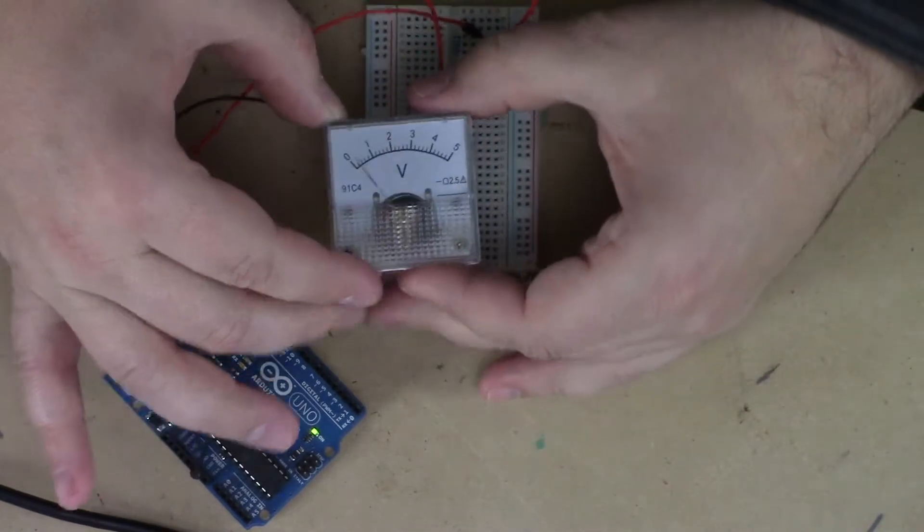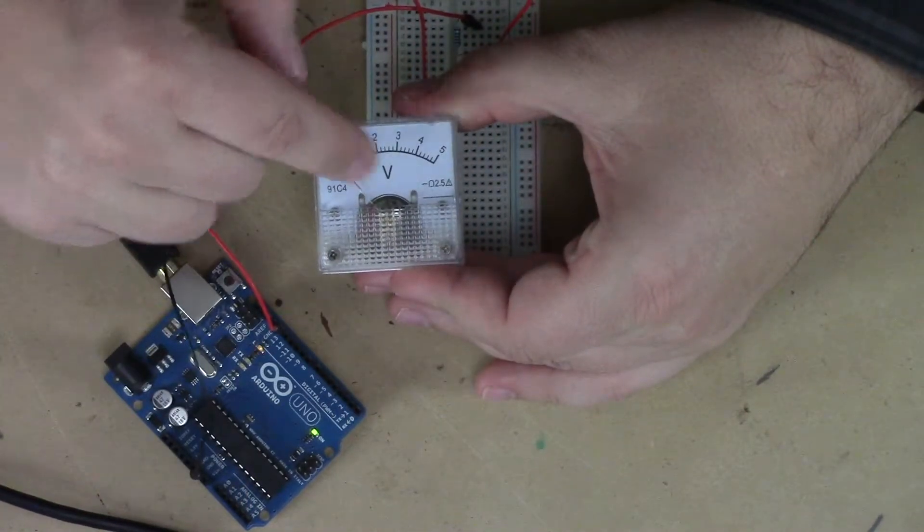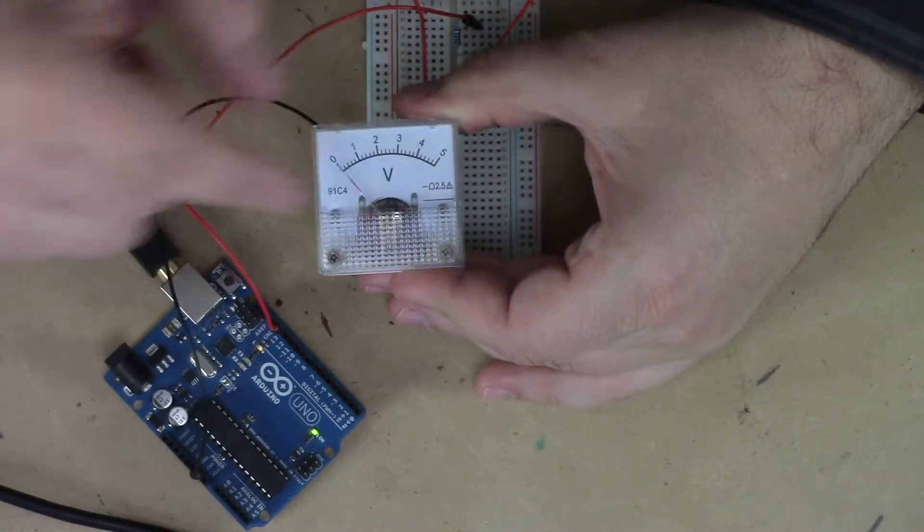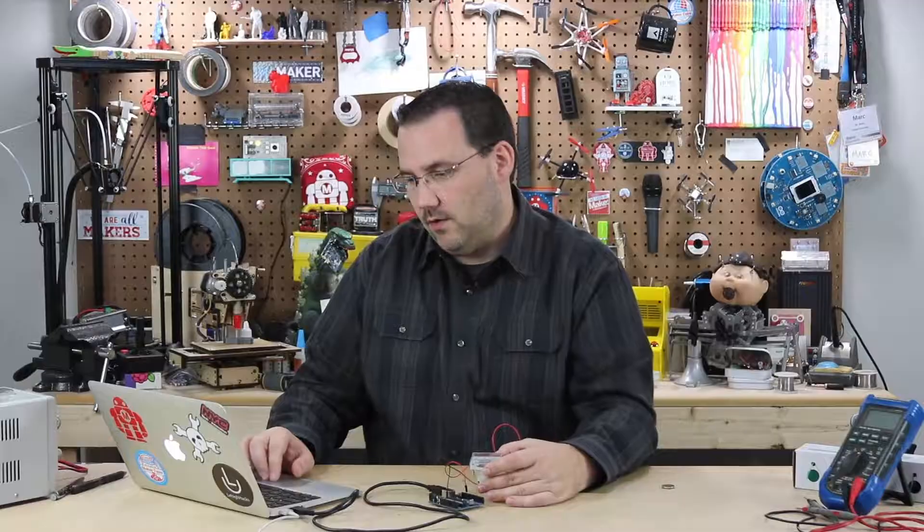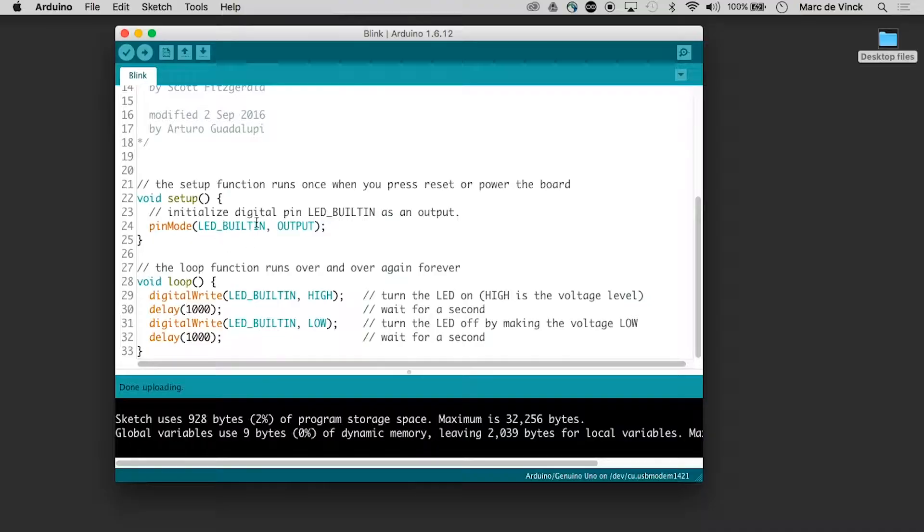You can even hear a little bit of a mechanical sound there, and it's going from zero to five. Zero, five, and that's just exactly what the code is doing. If you look at the code, it says output LED pin, or the LED built-in pin, which is 13, goes high, then pauses for a second, goes low, pauses for a second.